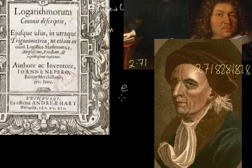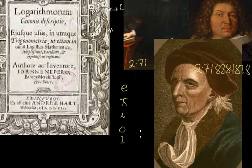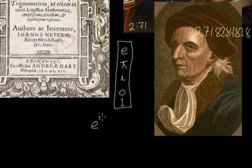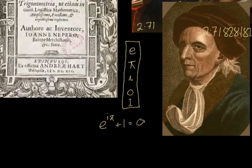Euler also named the number 3.142 — π — the famous magic number representing that the circumference of a circle is more than three times the diameter. He also named the complex number, the square root of minus 1, as i. These three numbers — e, π, and i — are among the greatest numbers of all time, along with zero and one. He then combined all five numbers into what is called the greatest mathematical formula of all time: e to the power iπ plus 1 equals zero.